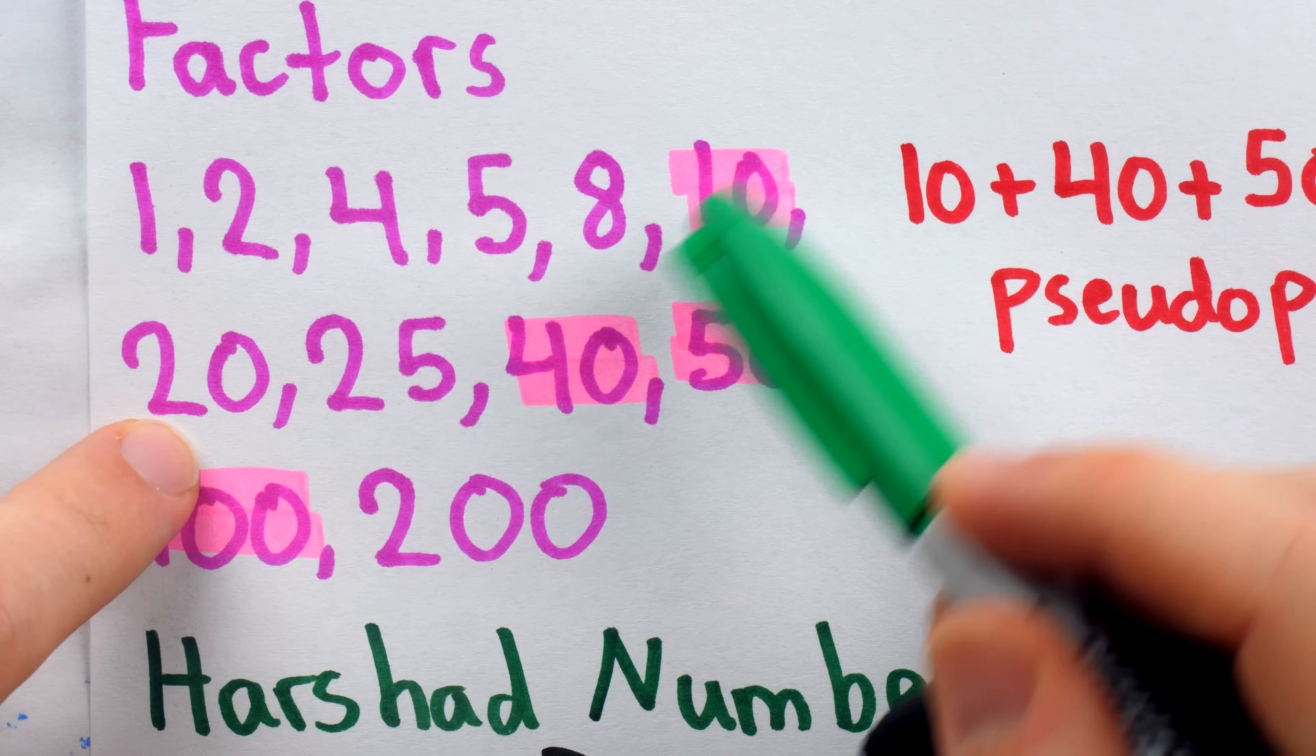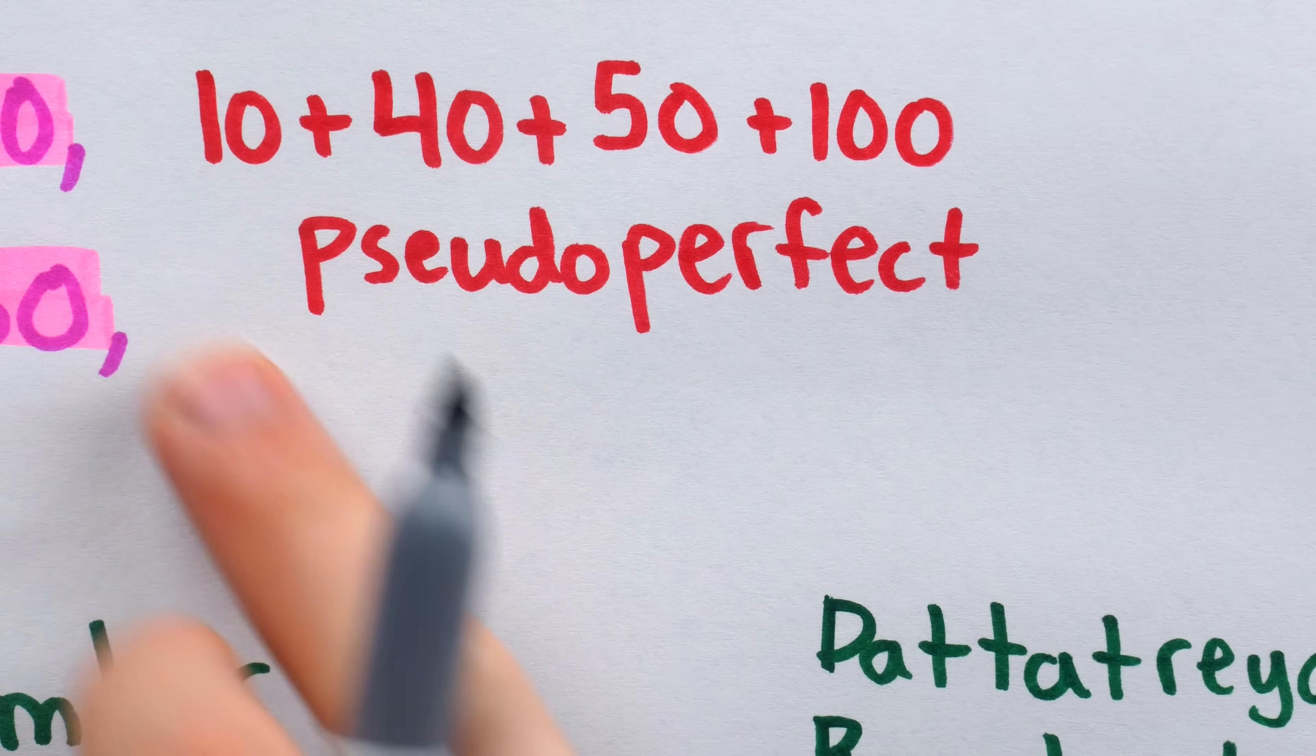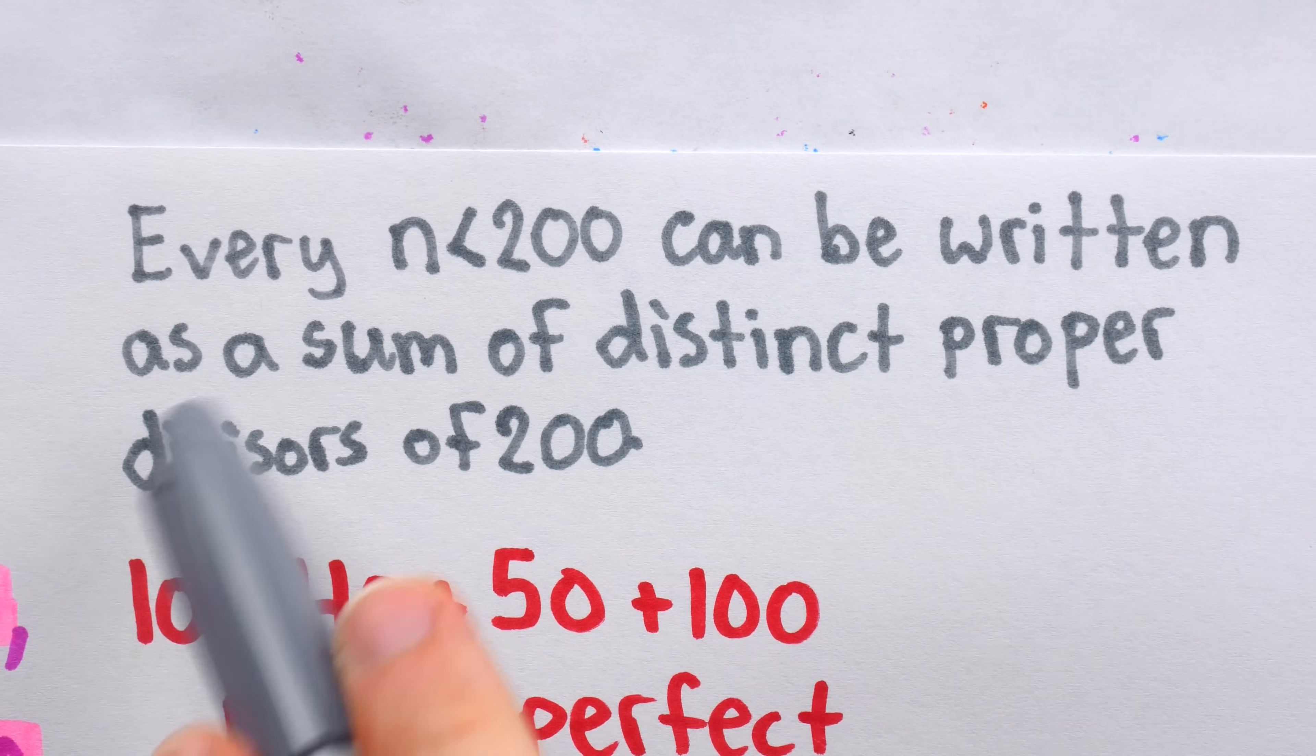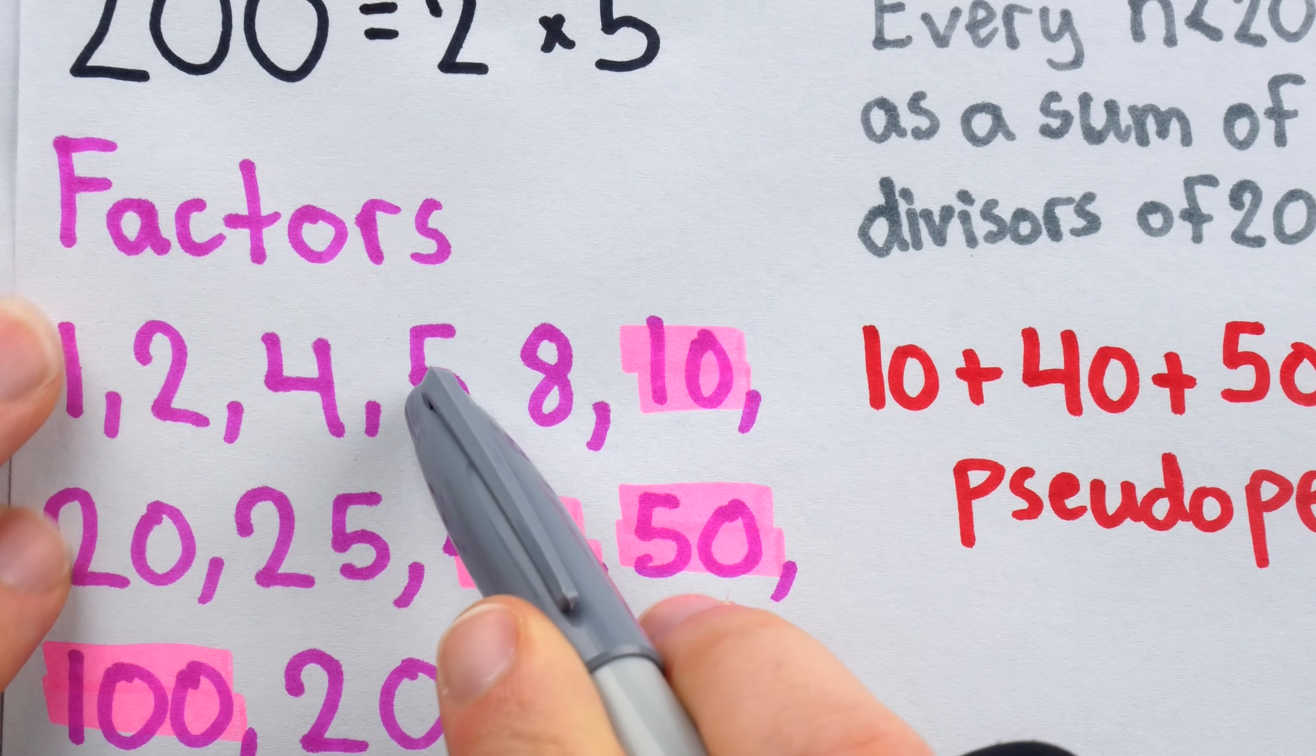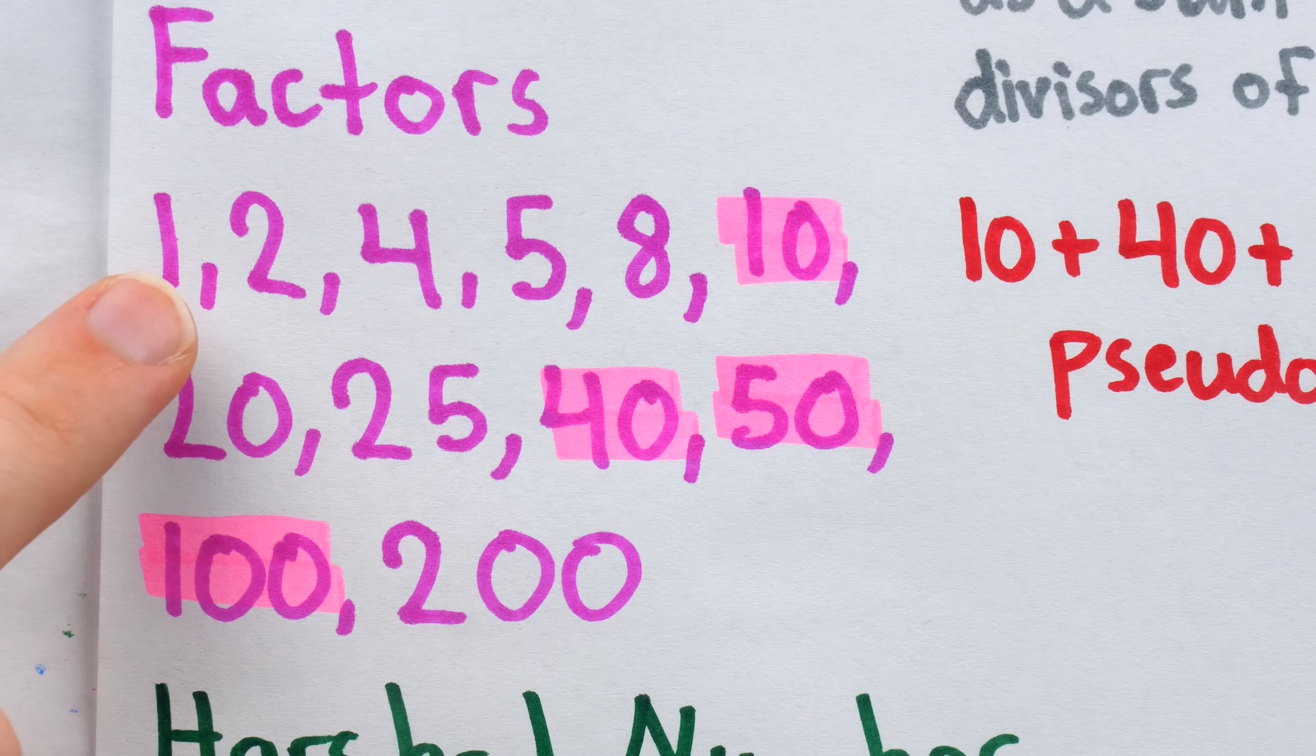We said before how we can take some distinct divisors of 200 and add them together to get 200, which makes it pseudo-perfect. But we can go a lot further than just adding up divisors to get 200. In fact, every positive integer less than 200 can be written as a sum of distinct proper divisors of 200. This makes 200 an example of what we call a practical number. For example, how could we write 15? Well that's easy, just 10 plus 5. What about 73? 50 plus 20 plus 2 plus 1. What about 69? 40 plus 20 plus 8 plus 1.